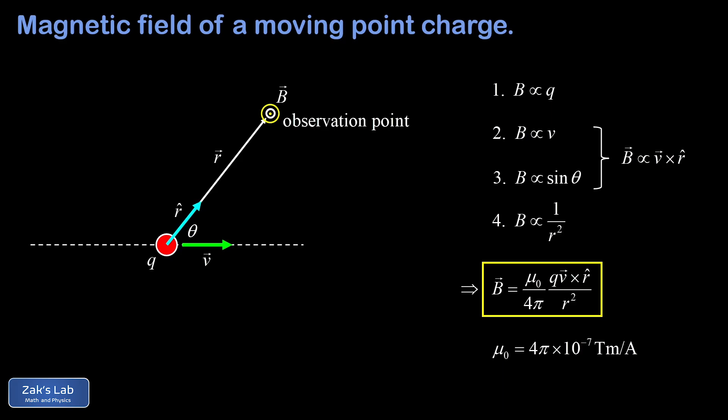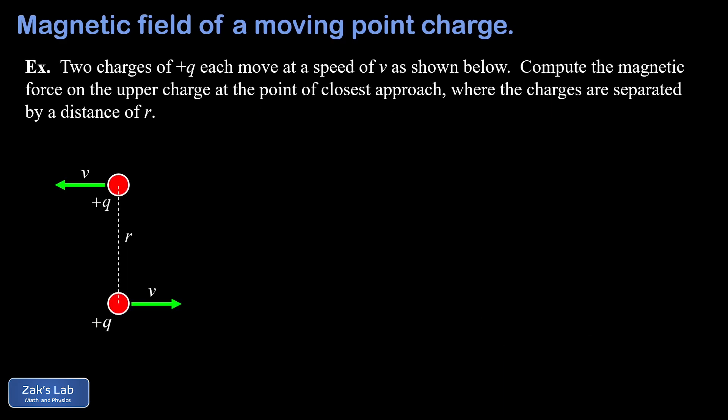Now that we have our general formula for the field generated by a moving charge, we can work a simple example. Our example is purely symbolic this time. We're given two positive charges, each with magnitude Q, and they're both moving with the same speed V but in opposite directions. We're asked to compute the magnetic force on the upper charge at the point of closest approach, where the charges are separated by a distance of little r.